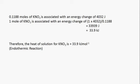We need to determine the energy change for 1 mole. The energy change of 4,032 joules is associated with 0.1188 moles of potassium nitrate, but we need to find it for 1 mole. So 1 mole of potassium nitrate is associated with 1 multiplied by 4,032 divided by 0.1188, giving 33,939 joules. Converting to kilojoules by dividing by 1,000 gives 33.9 kJ.